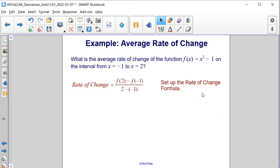We begin by setting up the rate of change formula. So we would have f of 2 minus f of negative 1, all divided by 2 minus negative 1.